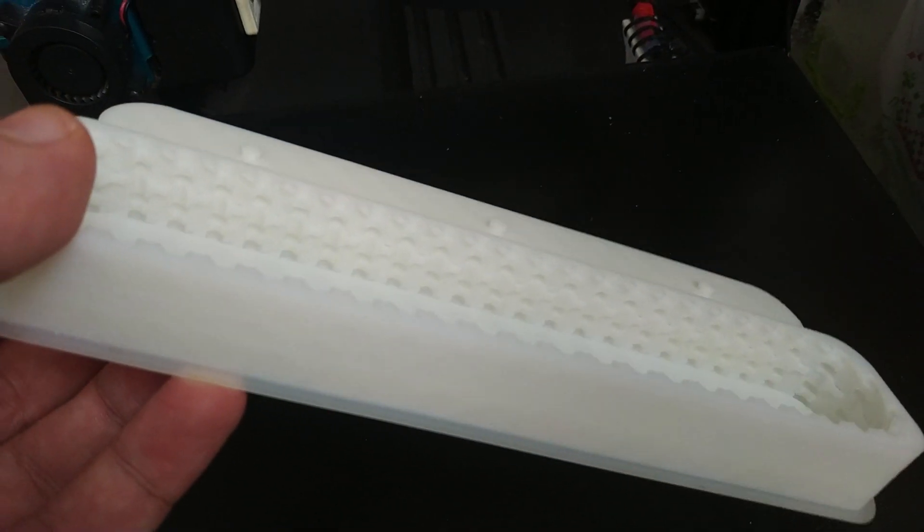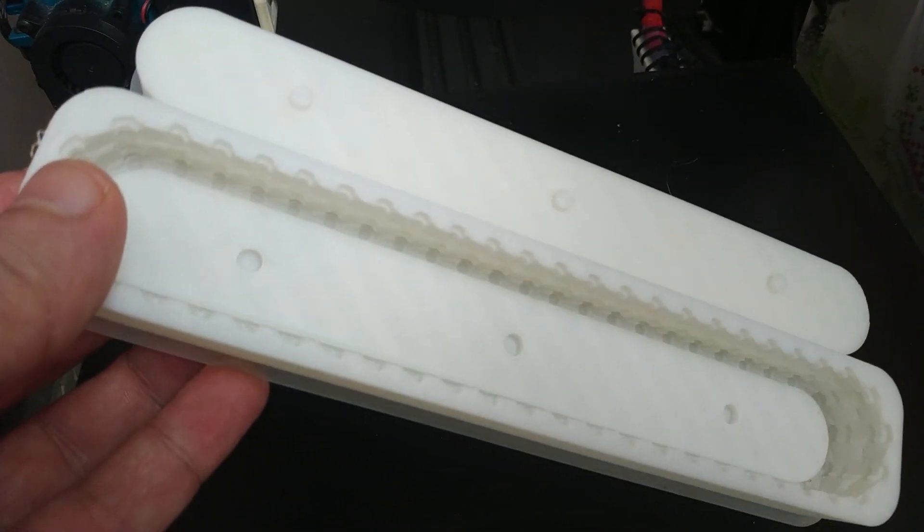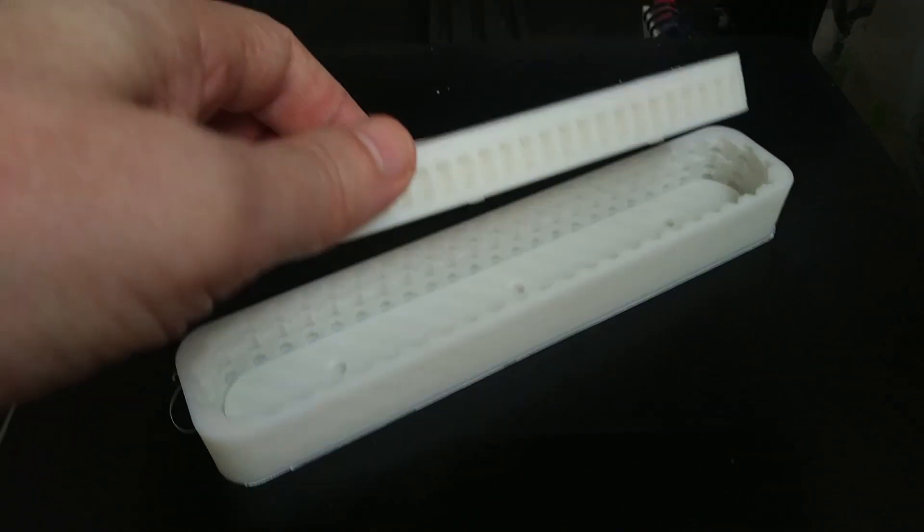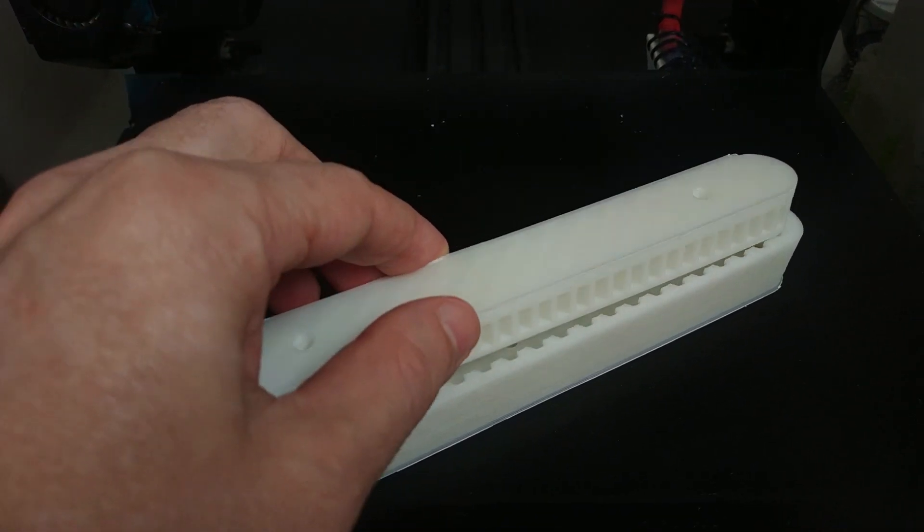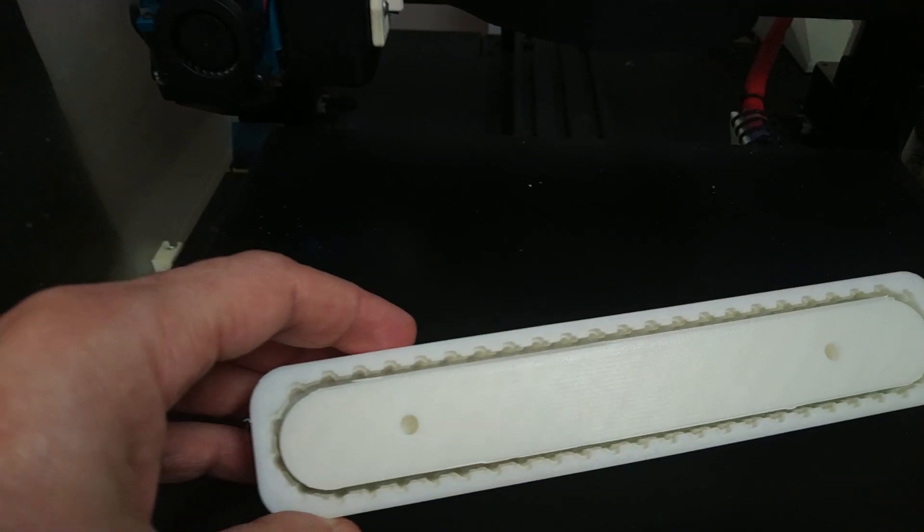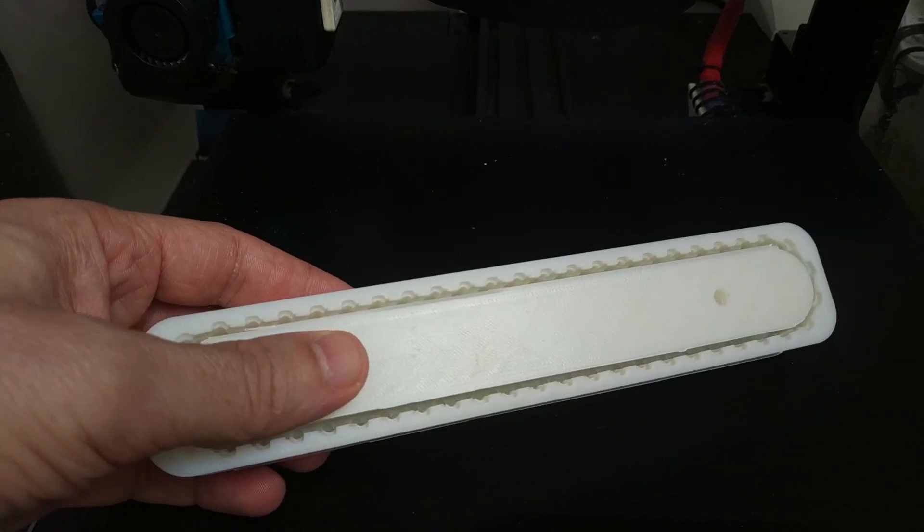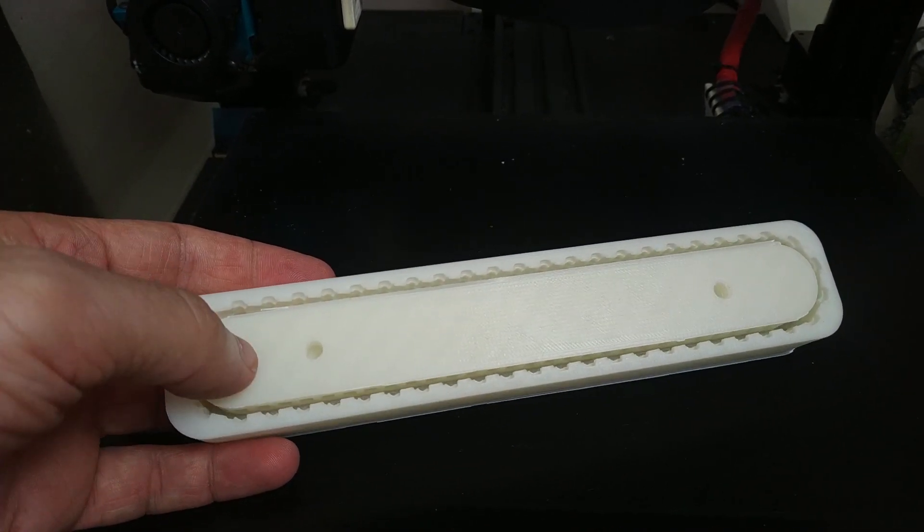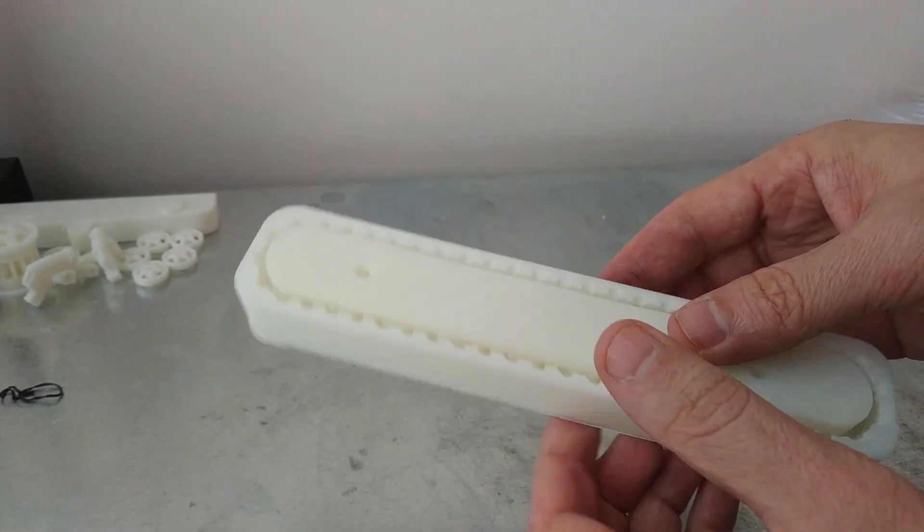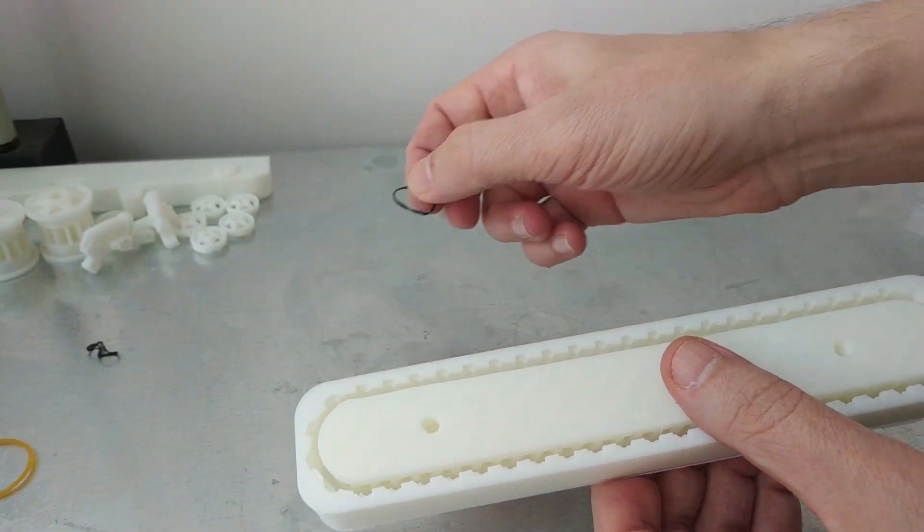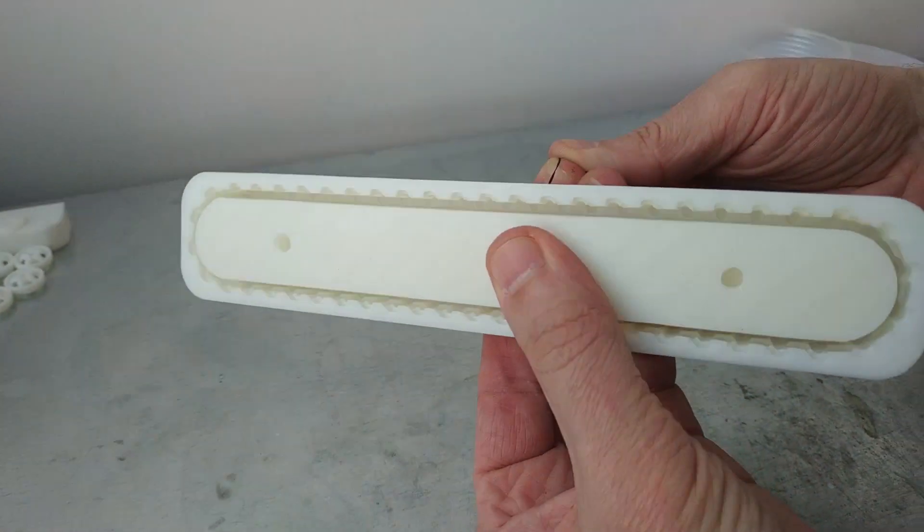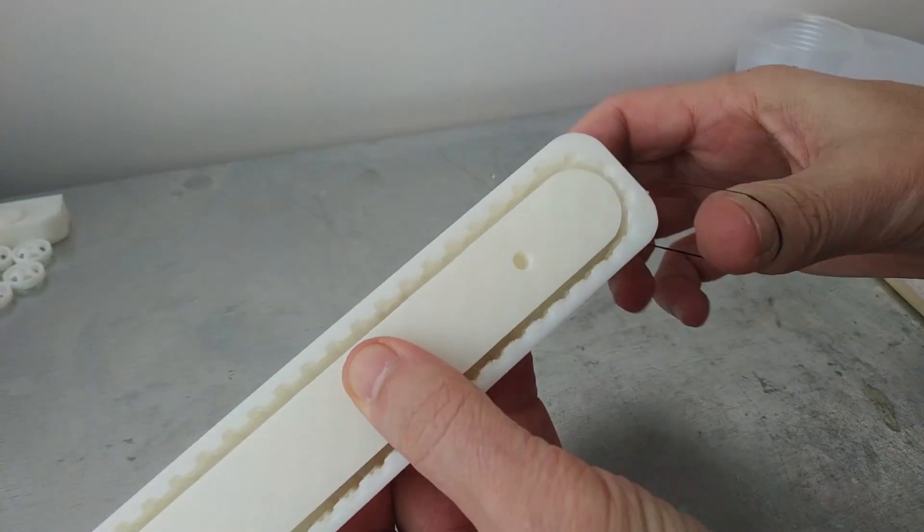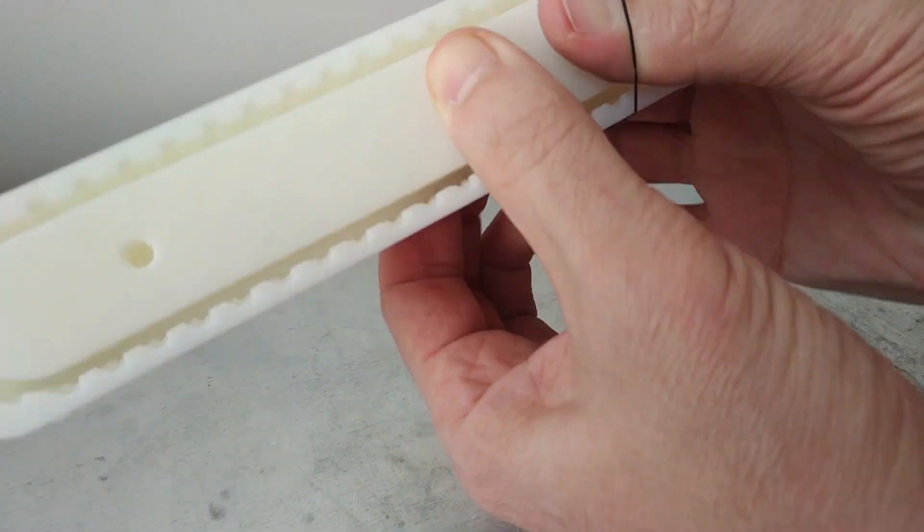To do this you need to print the mold on a 3D printer. I am using an FDM 3D printer. I printed the mold with ABS plastic, 0.4mm nozzle. Cut it out.